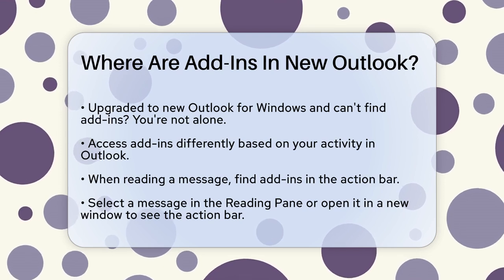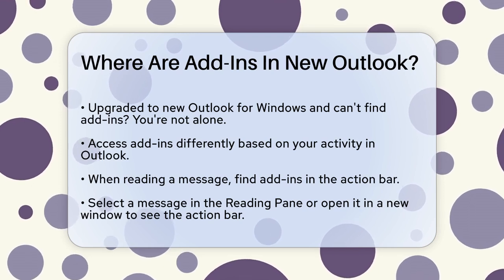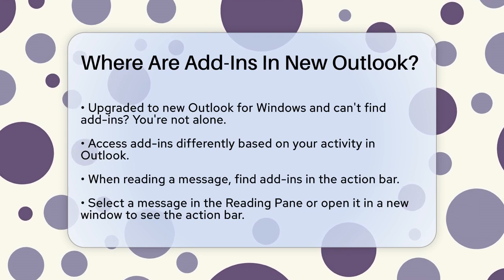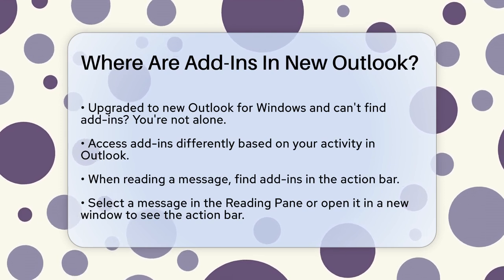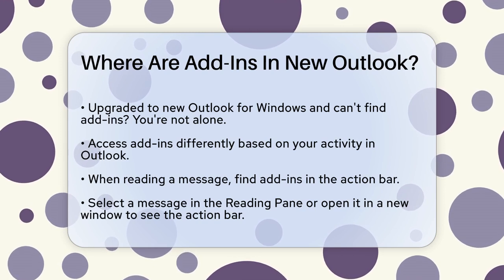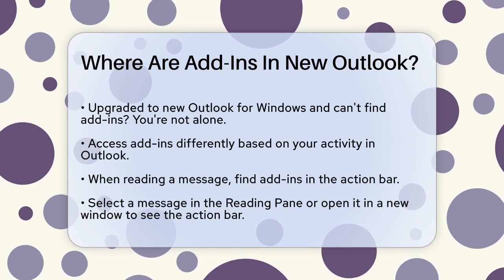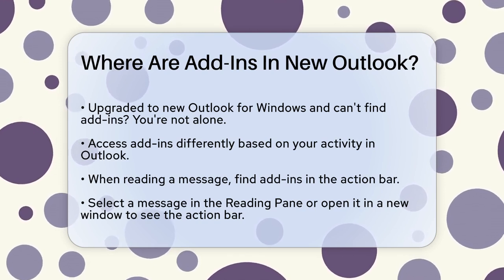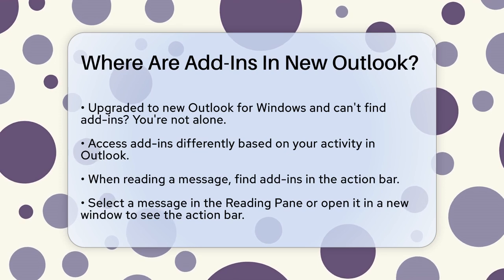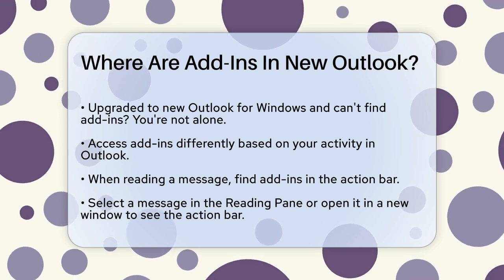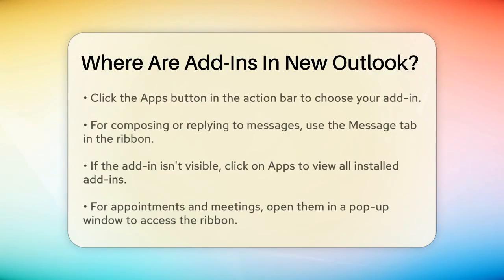In the New Outlook for Windows, add-ins are accessed differently depending on what you're doing. When you're reading a message, you'll find your add-ins in the action bar of the message. Select a message in the reading pane or open it in a separate window, then from the action bar of the message, click on the Apps button. Here you can select the add-in you want to use.